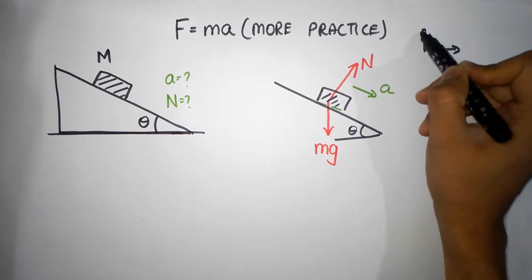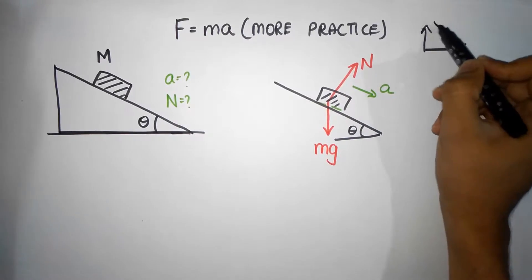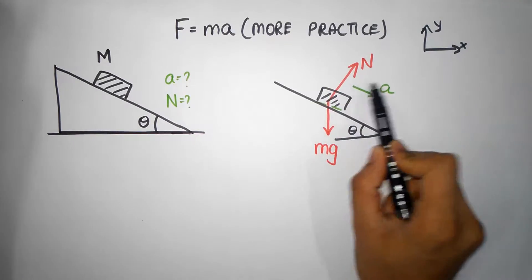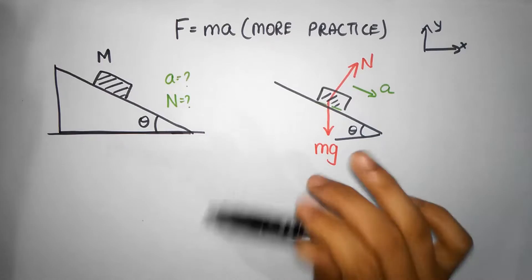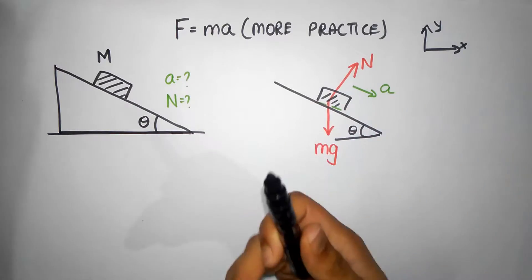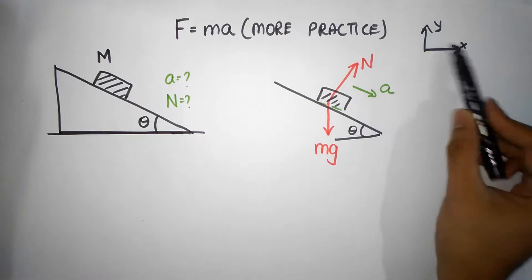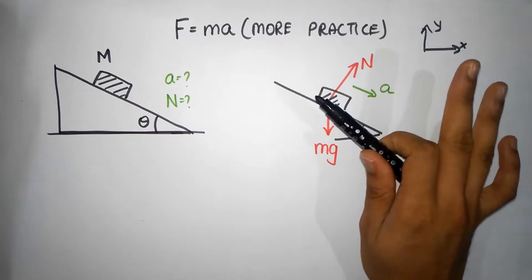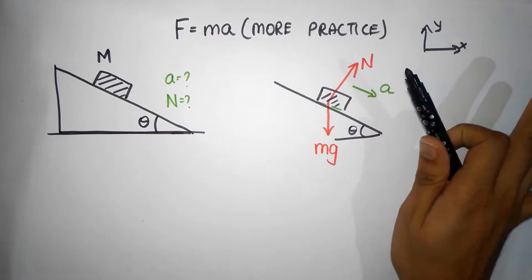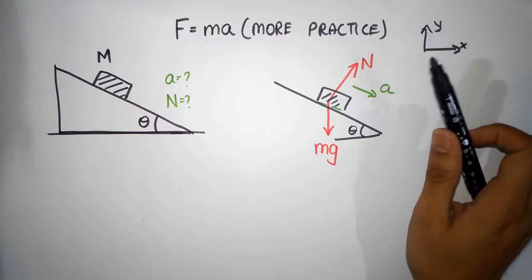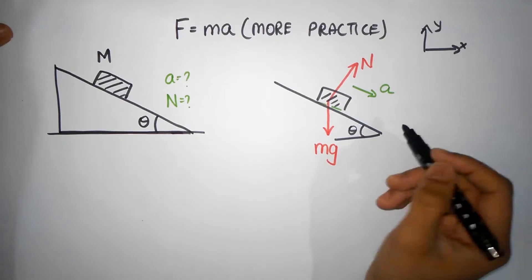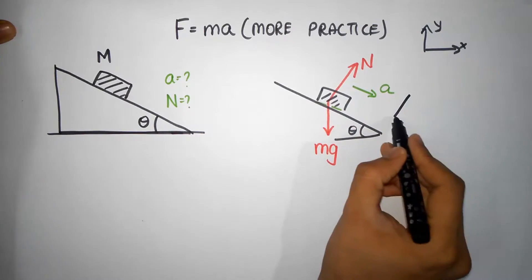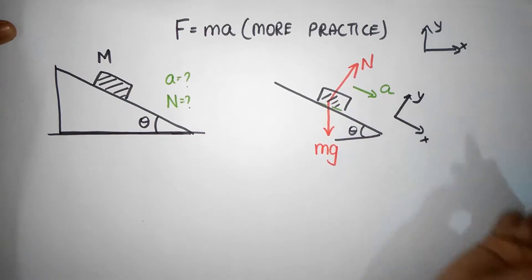Now you could usually choose horizontal and vertical this way, like what I did in the last problem. But guess what, if you do it this way, then you will see that the acceleration also has to be resolved. Usually what I like to do is choose x and y in such a direction that acceleration doesn't have to be resolved. Now that's not a necessity, but I like to do it that way. So it's just a personal preference.